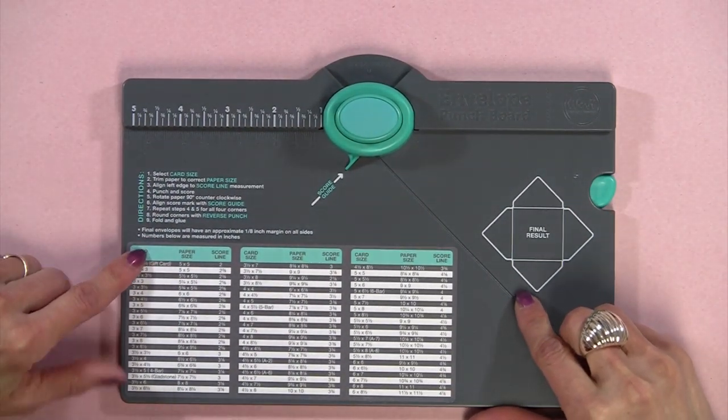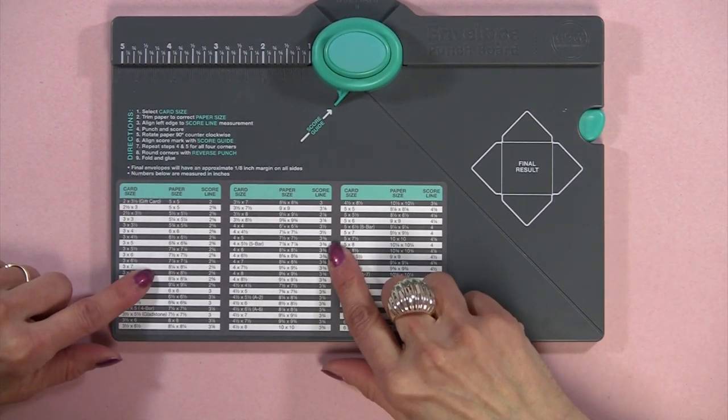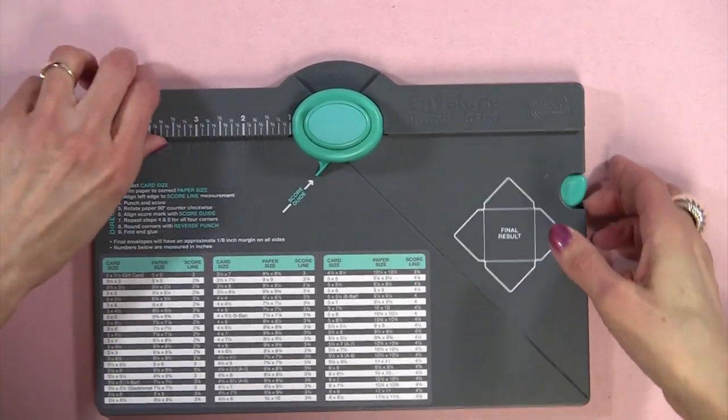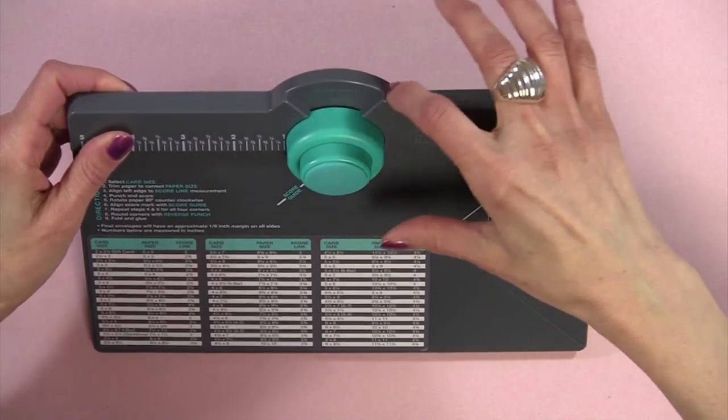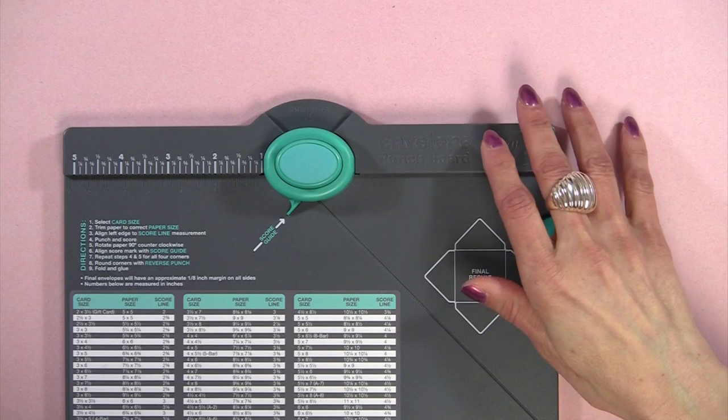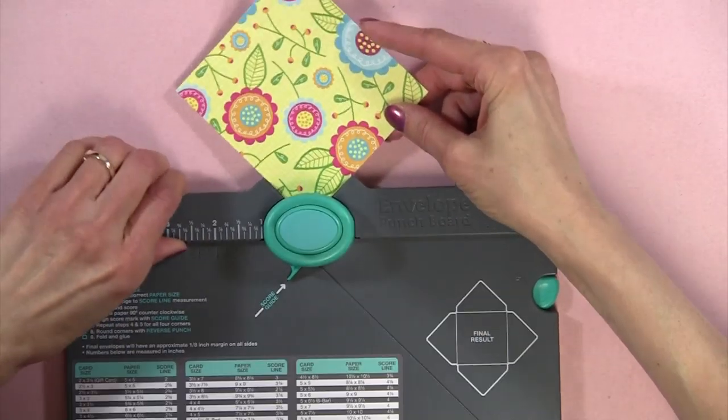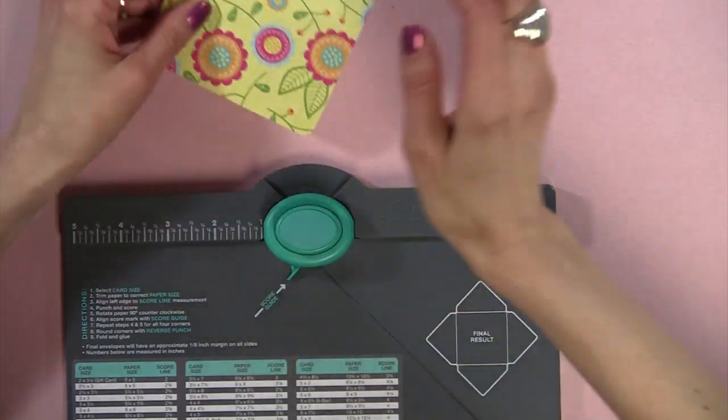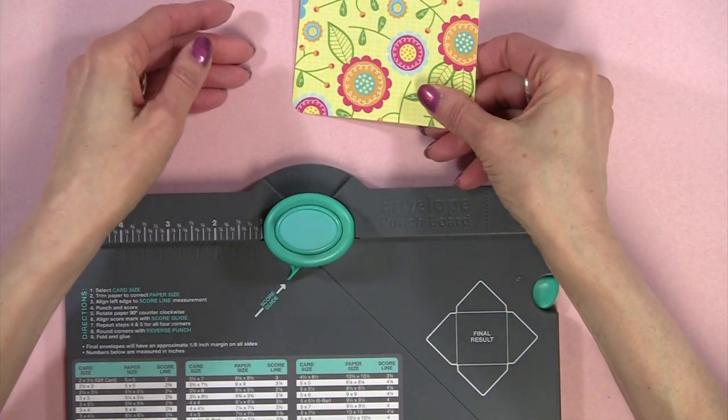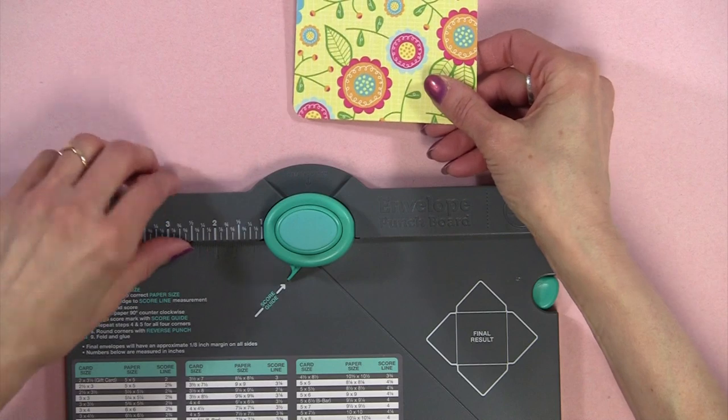The nice thing is there are directions on the front. There's also what we call a reverse punch. The nice thing about the reverse punch is you can use it as a corner rounder by just inserting the paper right in there and punching it. So it doubles as a corner rounder.